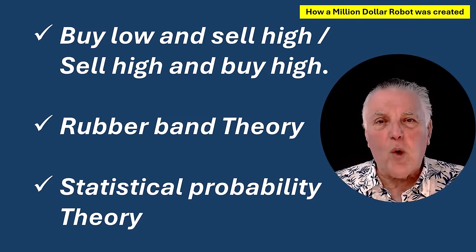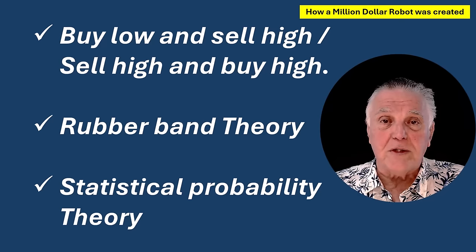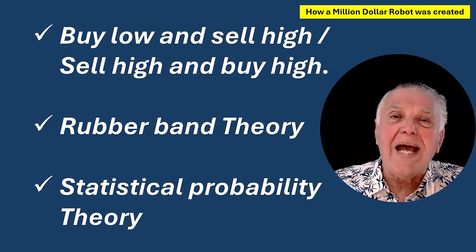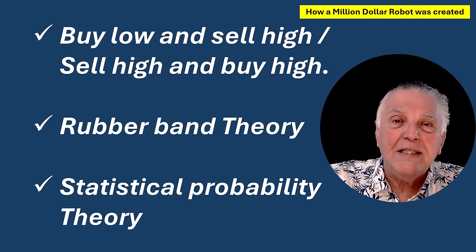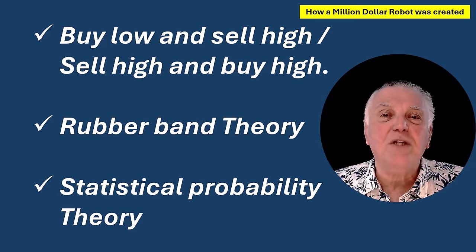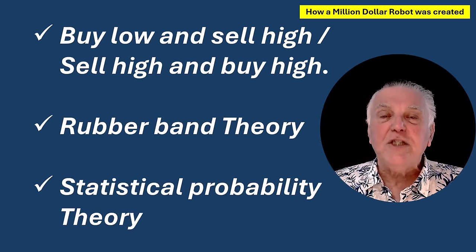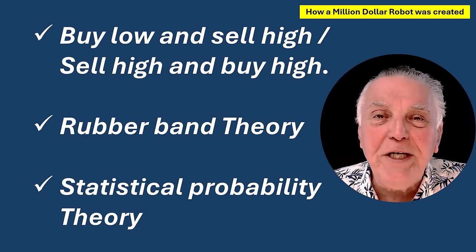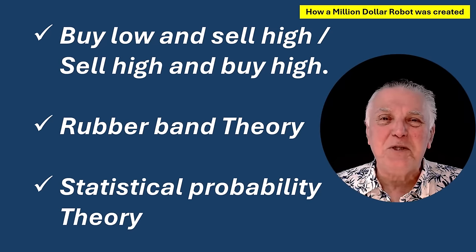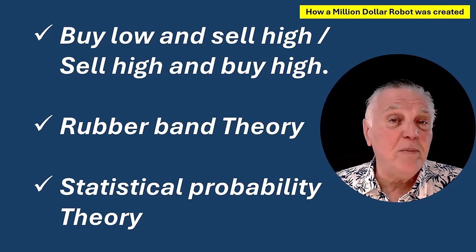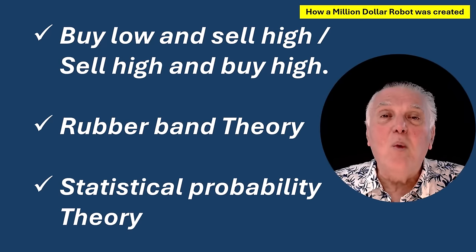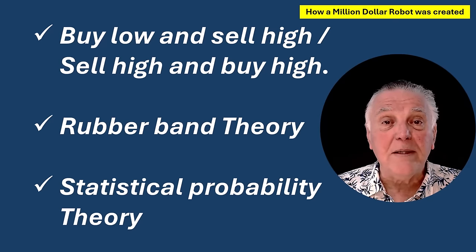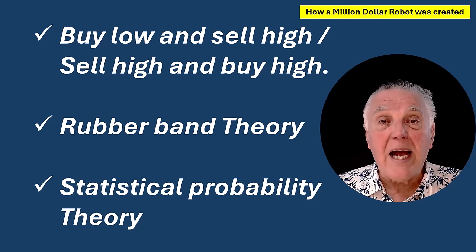Let's start by discussing some of the strategies this robot uses. Firstly, the most common advice you hear about trading is buy low and sell high, sell high and buy low. Those are the key strategies people tell you to do, but there's no definition of high and low — nobody knows what is high and what is low. What we're going to look at in this video is to get a better feel of what is meant by high and low.